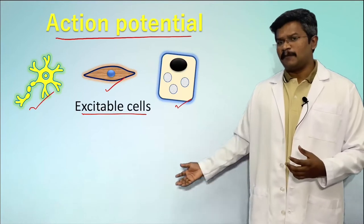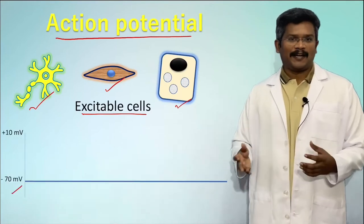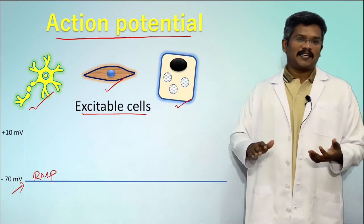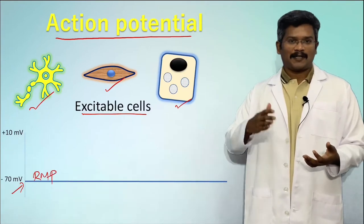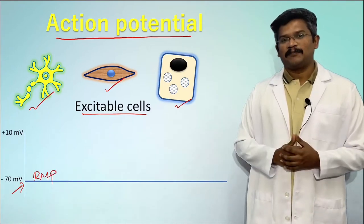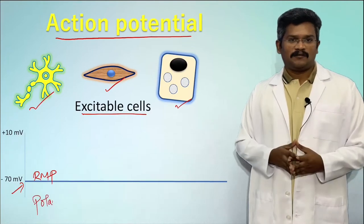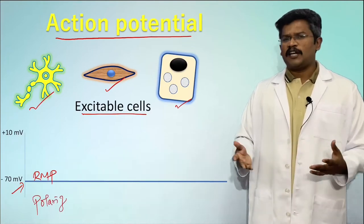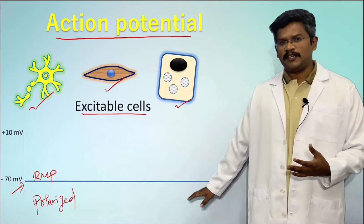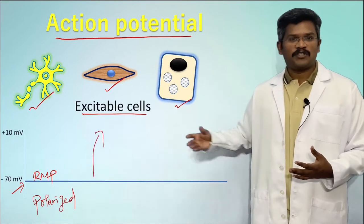At resting membrane potential, the cell membrane is negative — more negative ions near the inner side of the membrane compared to the extracellular side. This is referred to as a polarized state. During an action potential, the negativity of the membrane potential decreases and it becomes close to zero.